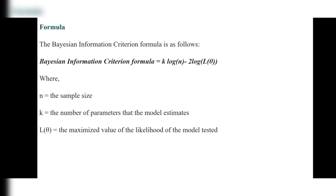The formula for the Bayesian Information Criterion is: BIC = k × log(n) − 2 × log(L(θ)), where n is the sample size, k is the number of parameters that the model estimates, and L(θ) is the maximized value of the likelihood of the model.